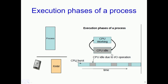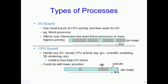Based on these phases of execution, we can classify processes into two types: IO-bound processes and CPU-bound processes. From a scheduling perspective, we would like to give IO-bound processes a higher priority — we want IO-bound processes to wait lesser time for the CPU compared to CPU-bound processes.